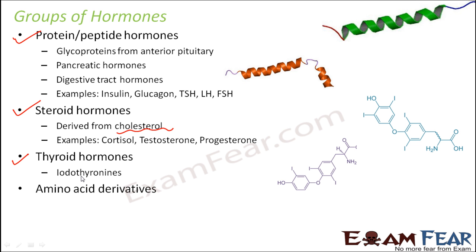Thyroid hormones — examples would be iodothyronines, which have the thyronine group with iodine. So T3 and T4 hormones fall under the category of thyroid hormones. These thyroid hormones are also derivatives of amino acids; however, they are not directly derived from amino acids, which is why they have been grouped separately. In some textbooks, thyroid hormones are placed under amino acid derivatives, since they are indirectly derived from the amino acid tyrosine.